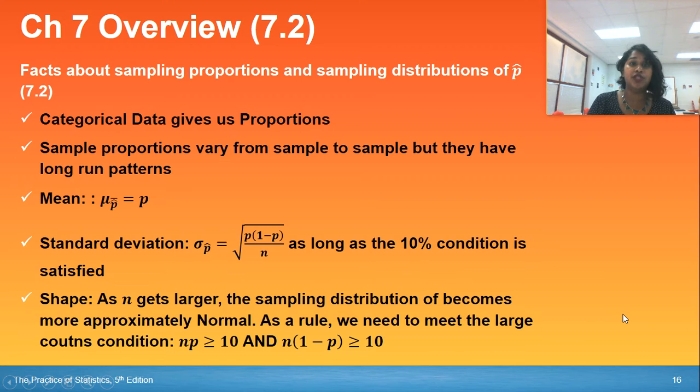Facts about chapter 7.2. Slide number one gives us our calculation facts. The biggest thing you should recognize from here is sample proportions can vary from sample to sample. But in the long run, you have this beautiful pattern. And because you have that pattern, the mu value of your p hat, your mean of your p hat, will be equal to that p value. And the standard deviation of your p hat can be represented by this formula as long as you meet your 10% condition rule.